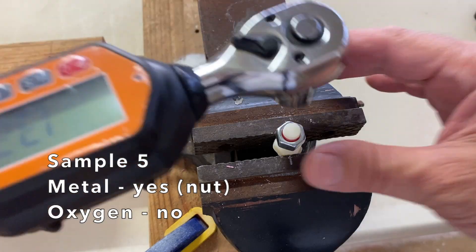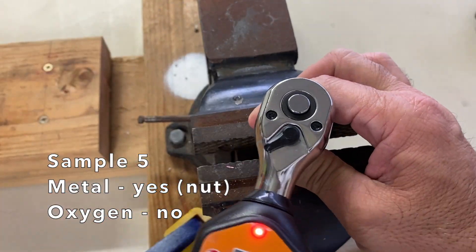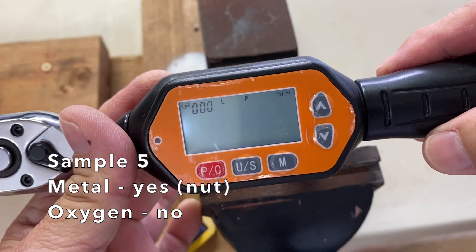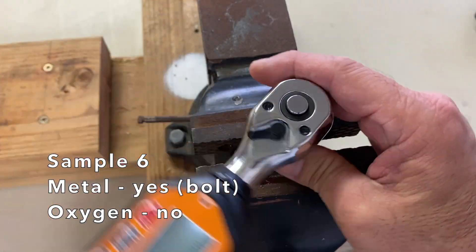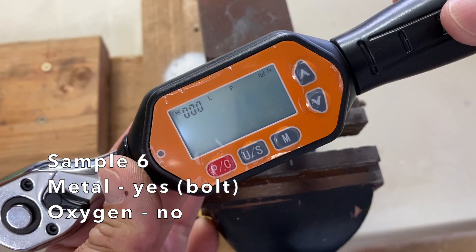Next, Sample 5. A weak 2.19 foot pounds. And Sample 6. A measly 1.57 foot pounds.